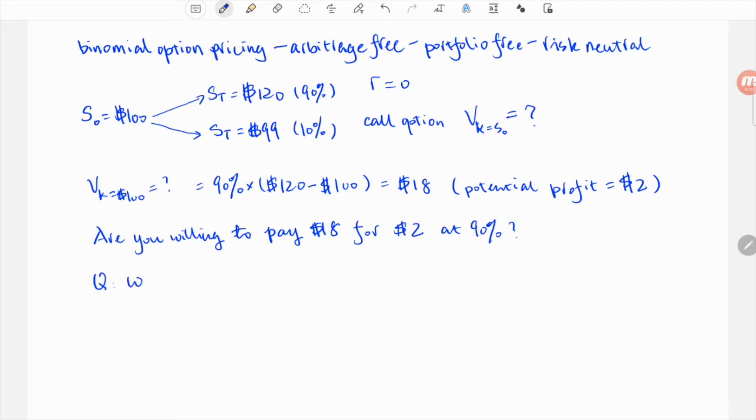Another question is, if I am the seller, do you think I would make this deal with you? Meaning take the $18 and write you that option. For me this means 90% chance I will lose $2 and 10% chance of winning $18.